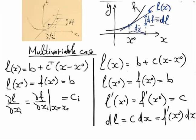In the multivariate case, as shown in the picture with two variables x₁ and x₂, I have a plane which is tangent to the plot of my function. I give some increments dx to my variables, and the differential of the function is the increment of this tangent plane — this linear function. The general expression for the linear function is some constant plus c transposed by the difference of x, where c is a vector of the same dimension as x. At x₀, the function and its linear approximation are the same, so b equals f(x₀).